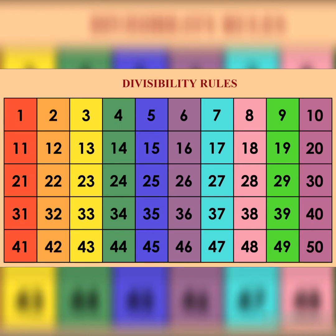Divisibility by 9 – a number is divisible by 9 if the sum of its digits is divisible by 9.